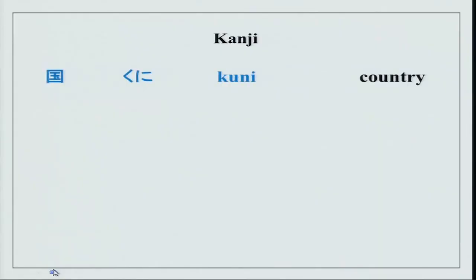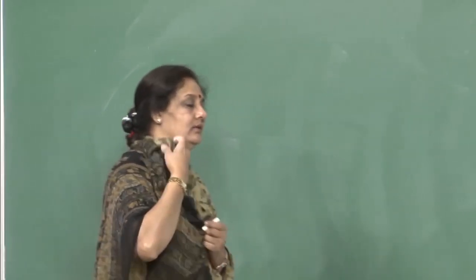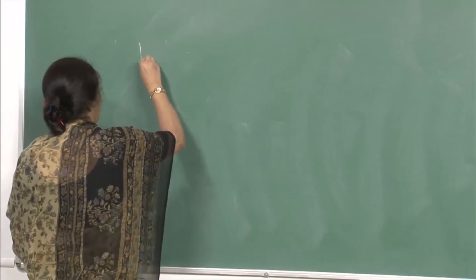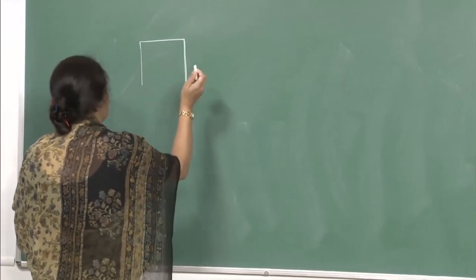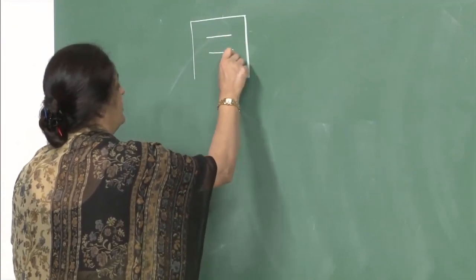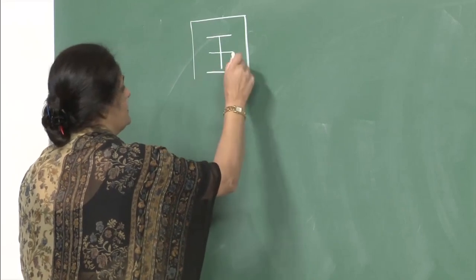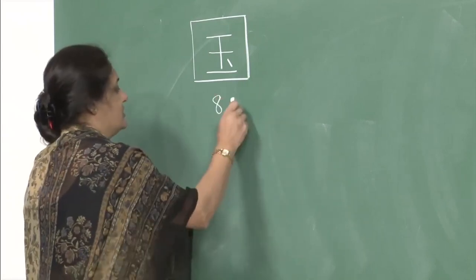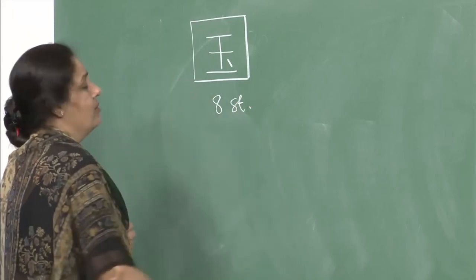As we always do, we are going to do kanji today. Simple characters — these words you know and we will try to learn them as kanji characters. Kuni means country. Let us count the strokes: 1, 2, 3, 4, 5, 6, 7, and 8 — it is an 8-stroke character, drawn in a box.